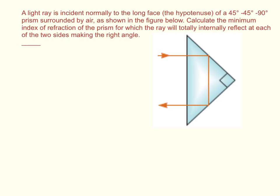A light ray is incident normally to the long face, the hypotenuse, of a 45-45-90 prism surrounded by air, as shown in the figure below. Calculate the minimum index of refraction of the prism for which the ray will totally internally reflect at each of the two sides making the right angle.